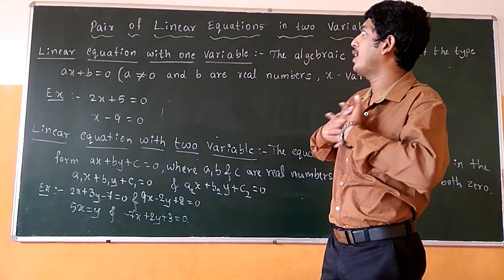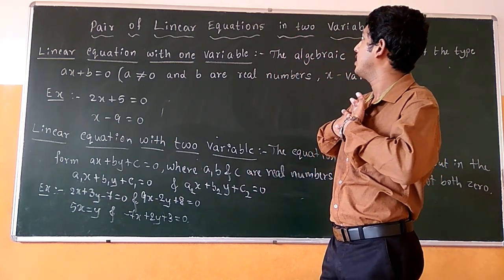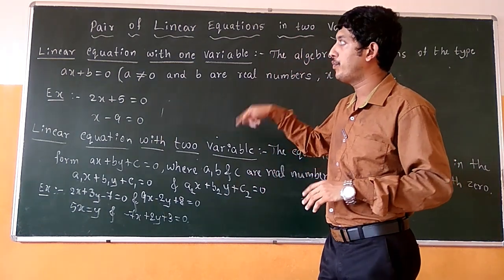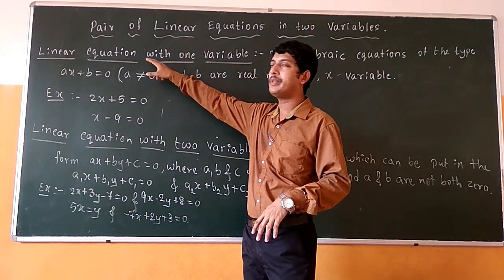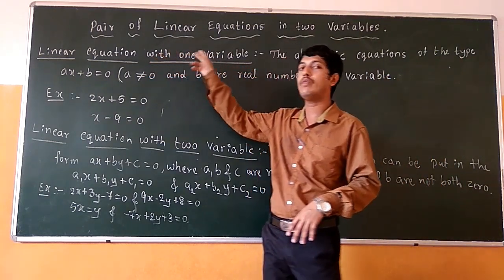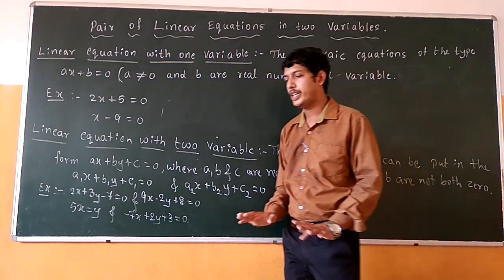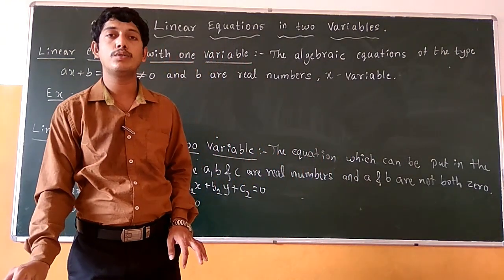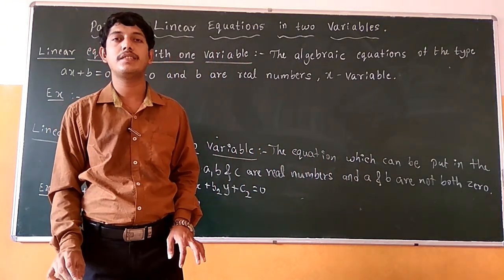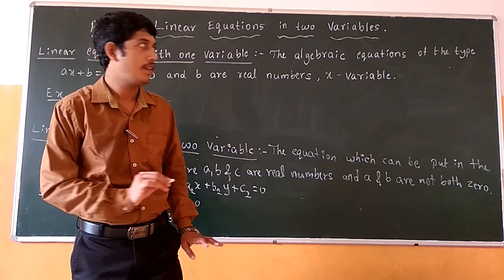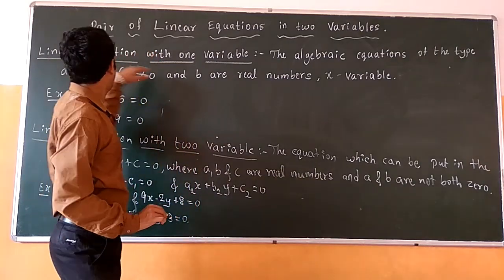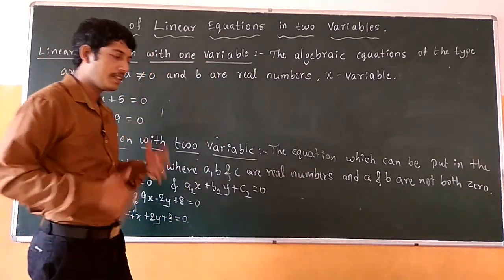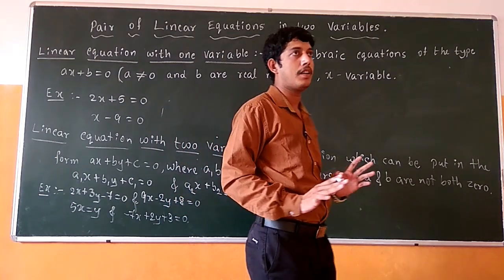So now we have pair of linear equations in two variables. Before going to that, we have to learn what is meant by linear equation in one variable. Variable means the term whose value does not remain same throughout the process. With one variable, that means it contains a single variable.